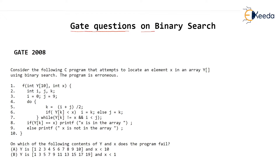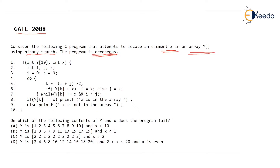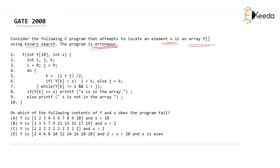Let's see the GATE 2008 question. We have been given a binary search function and it is being said that it is erroneous — this function will not work properly to search an element in the array. y is an array and x is the element we would like to search. Given that this function is wrong, we are asked on which of the following contents of y and x will this program fail. Four options have been given and they are asking that this function will work for three of these examples but for one — either a, b, c, or d — this function will fail.